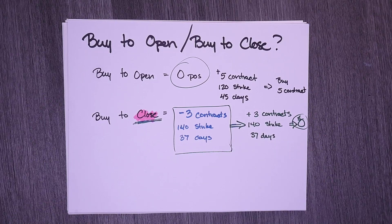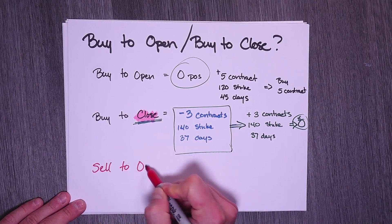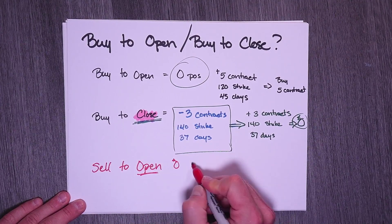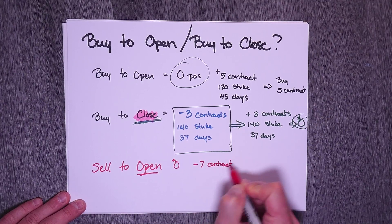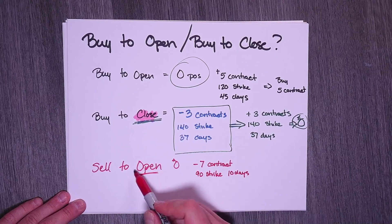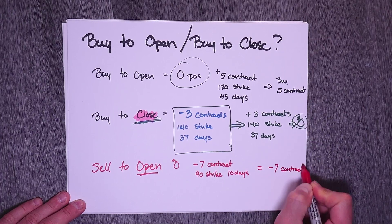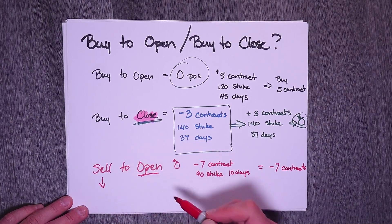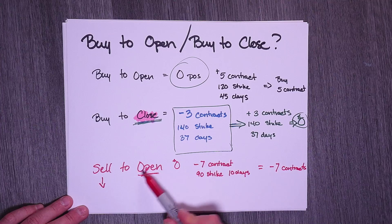Now you can work in reverse. Sell to open — what do you think that means? Sell to open means I'm starting with a zero position and I'm trying to open something. That means I would sell first — let's say negative seven contracts at the 90 strike, 10 days out. So I'm selling to open, and what am I left with? I have negative seven contracts in my account. I owe somebody something — I sold to open. Now what do I need to do? I need to close this — that is where I go buy to close.